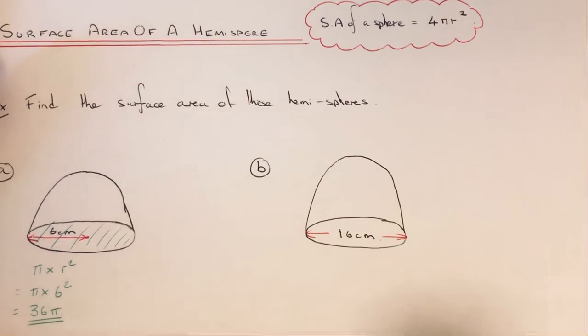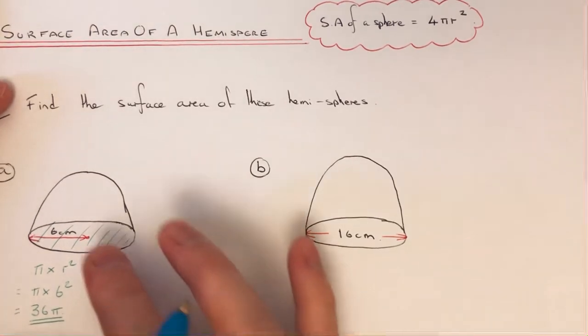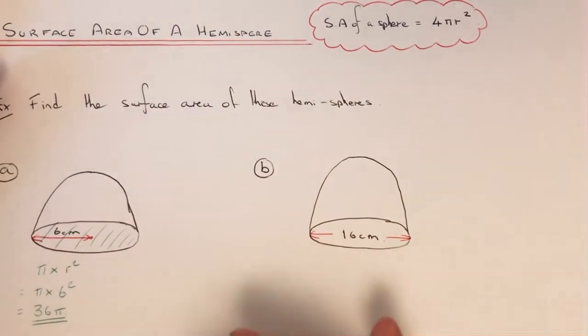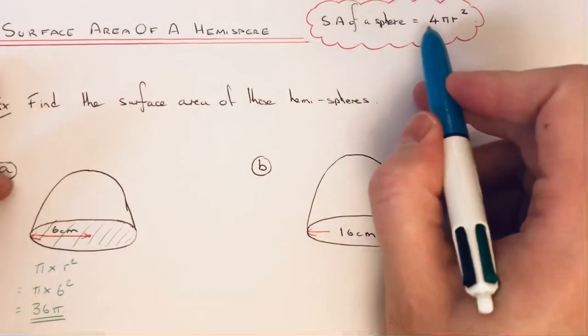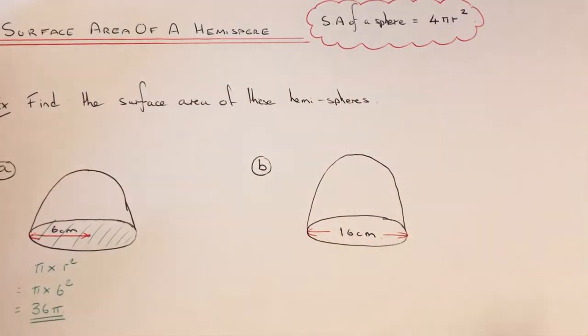So we just need to now work out the area of the curved surface at the top. To do this, we need to use the formula for the full sphere, so that's 4πr², and then we need to divide that answer by 2.